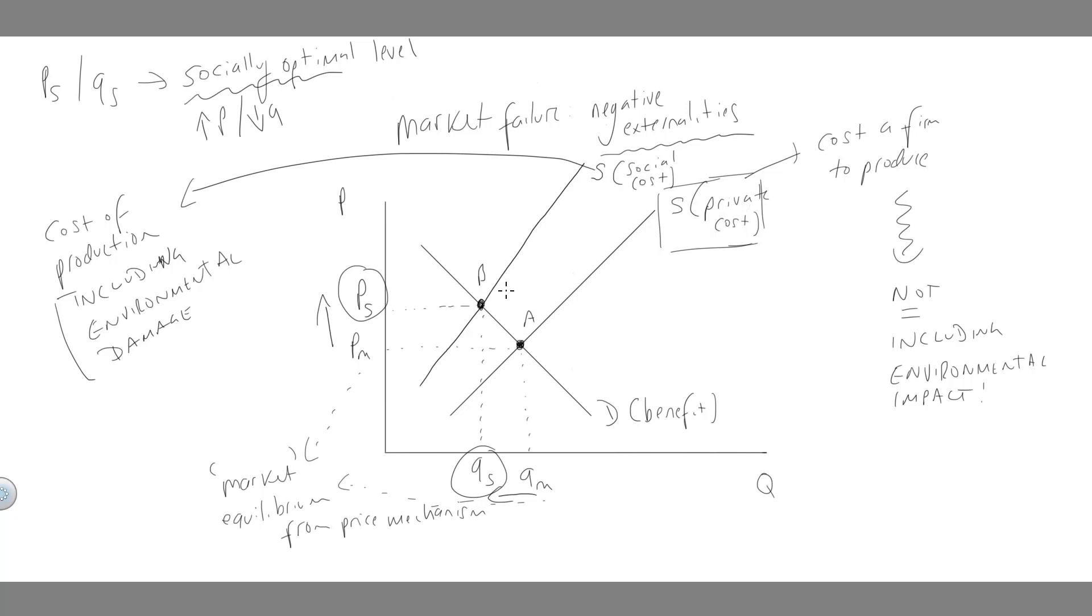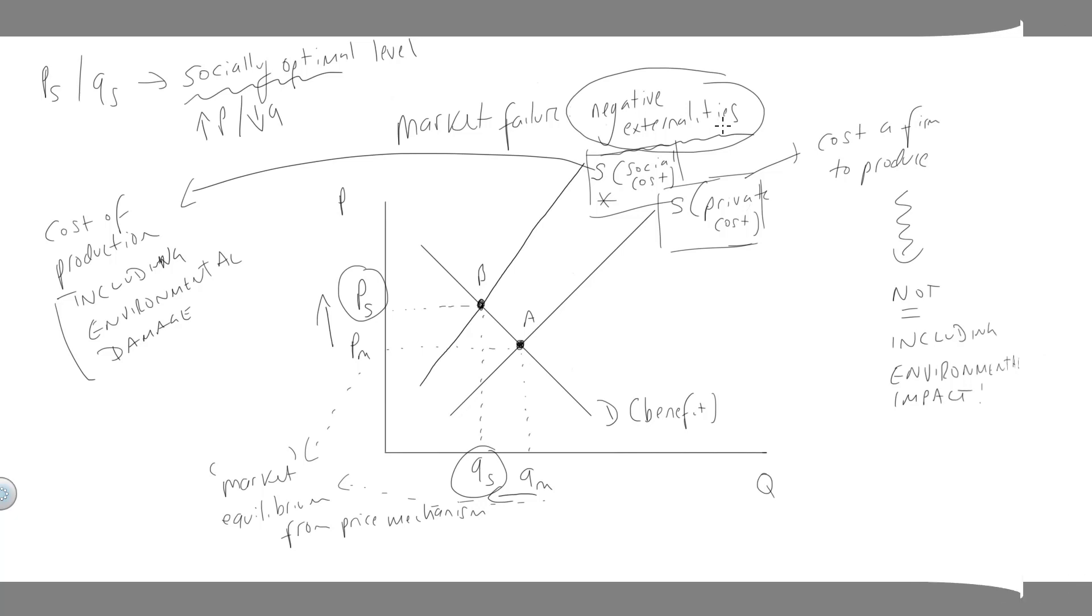But really, if we are trying to take into account the full cost of production, we should be producing where demand is equal to the social cost. And that is at a higher price and a lower quantity. Remember, just before we move on, that this situation is for negative externalities.